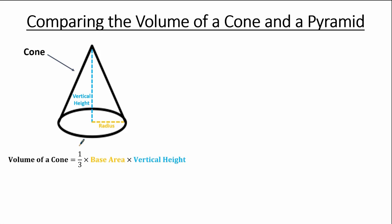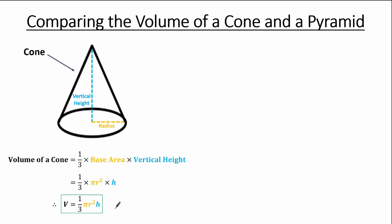The volume of a cone equals one-third multiplied by the base area multiplied by the vertical height. We call the vertical height h, and the base area is the area of the circle. So with radius r, the area is pi r squared, and the volume of a cone is one-third multiplied by pi r squared multiplied by h. So V equals one-third pi r squared h. The units are very important — if the radius is in centimeters, the volume will be in centimeters cubed.